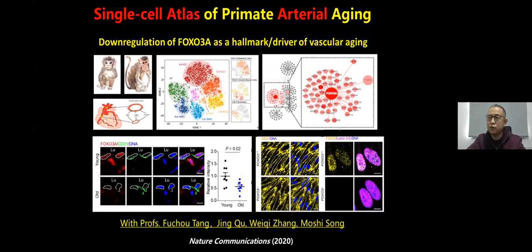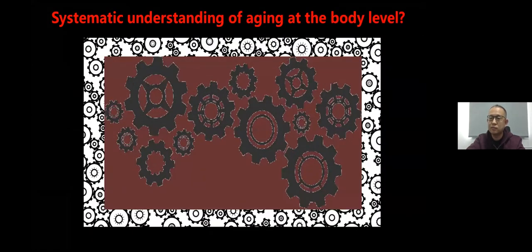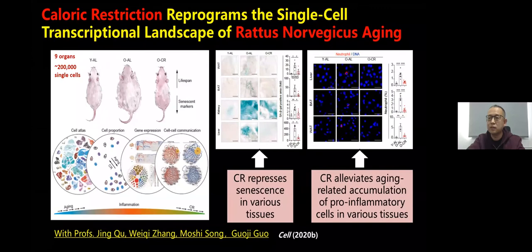The next scientific question we are interested in is how organs work together in the body aging process. By performing single-cell sequencing of nine different organs, we found that caloric restriction can reprogram the transcriptional landscape of rat aging. Caloric restriction not only inhibits cellular senescence, but also reduces pro-inflammatory cells in different tissues with age.